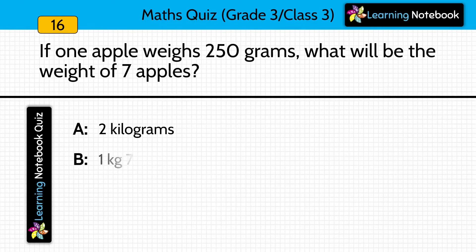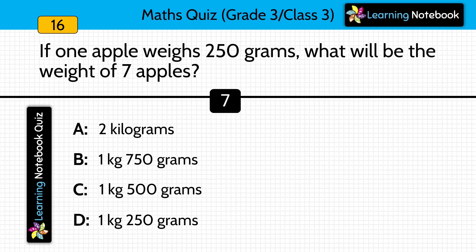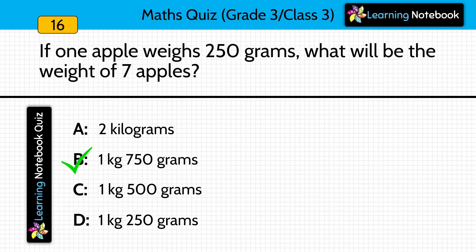If one apple weighs 250 grams, what will be the weight of 7 apples? Calculate the weight of 7 apples if one of them weighs 250 grams. Answer is option B, 1 kilogram 750 grams. We will multiply 250 grams by 7.